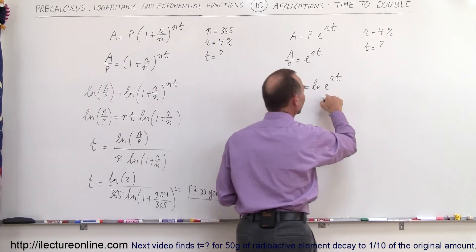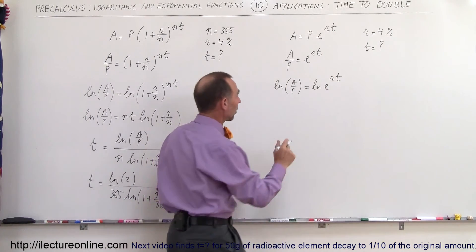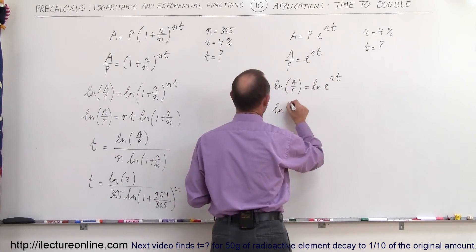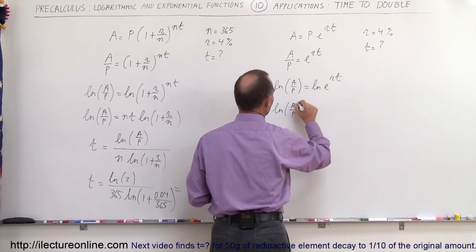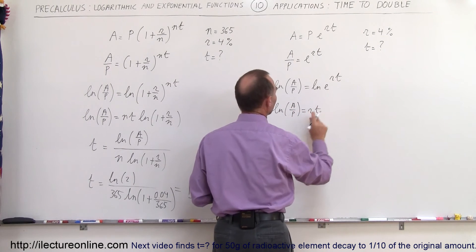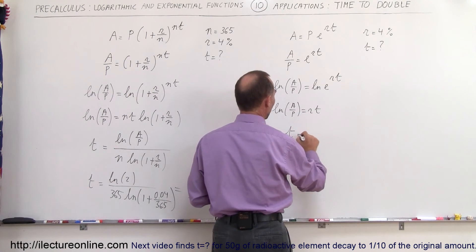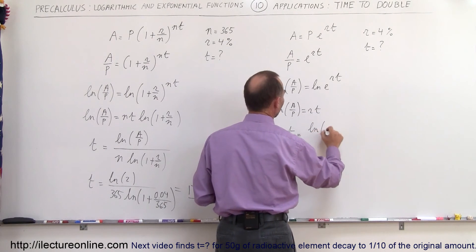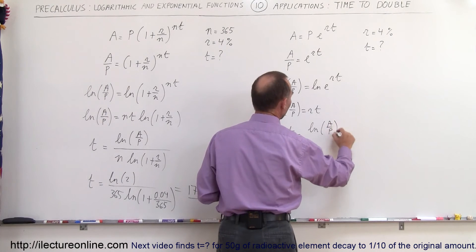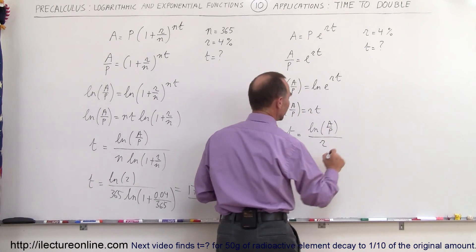Of course, the natural log negates the exponent, so that will give us simply rt on the right side, so the natural log of a over p is equal to r times t. Divide both sides by the rate, and turn the equation around. We get t is equal to the natural log of a divided by p, and divide the whole thing by the rate r.